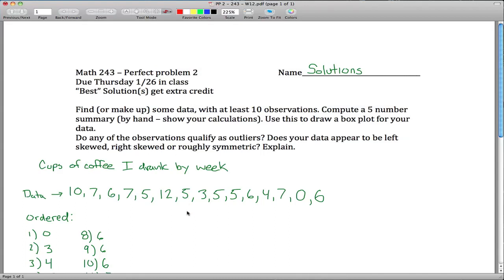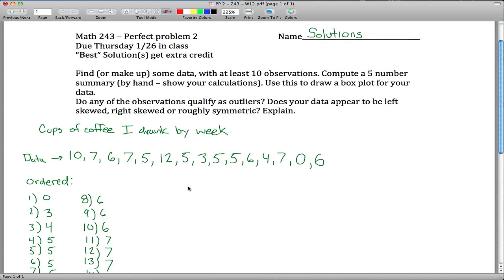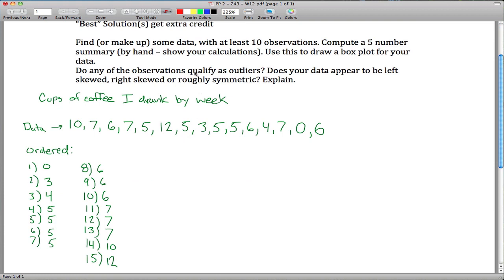This is the perfect problem number 2 for Math 243. This one was probably bad design on my part because I told everyone to make up their own data, so if you're grading this it might be a little tricky to do, but maybe you can follow this and get an idea of what people did was right or wrong.